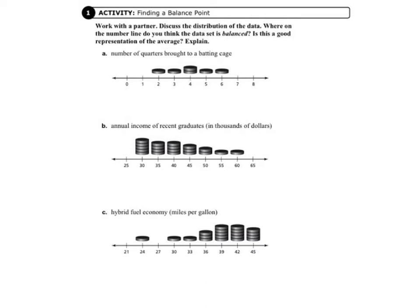Activity 1, Finding a Balance Point. Discuss the distribution of the data. Where on the number line do you think the data is balanced? Is this a good representation of the average? Explain.